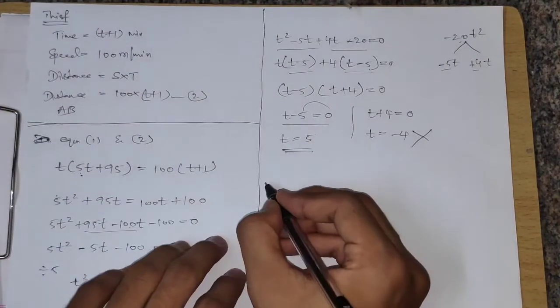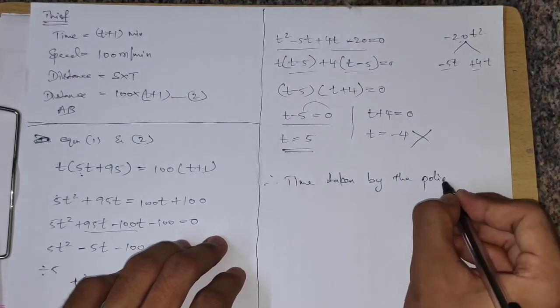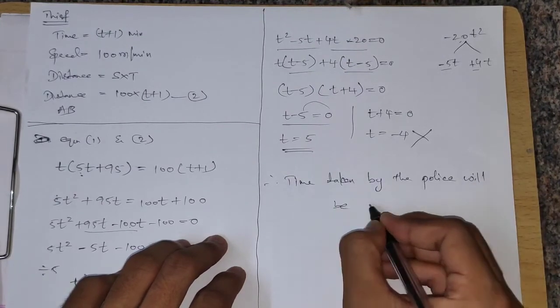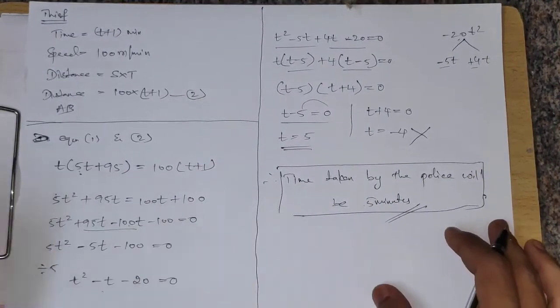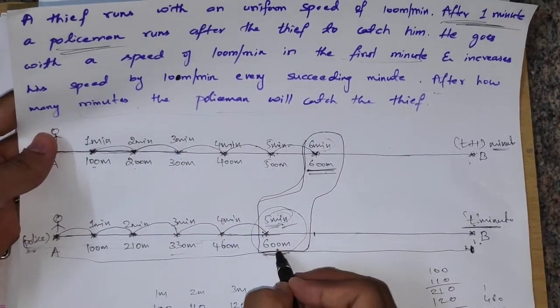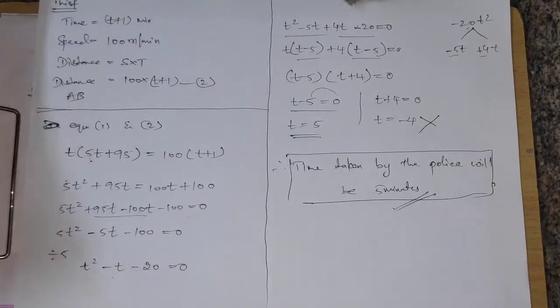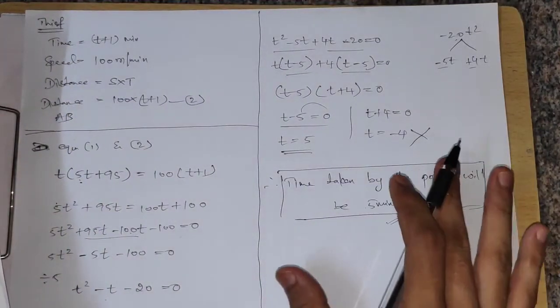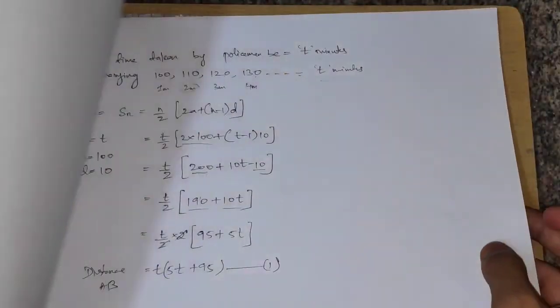So T = 5 or T = −4. We discard the negative value. Therefore, the time taken by the police is 5 minutes. In 5 minutes the police cover 600 meters, and the thief also covers 600 meters in 6 minutes — they meet at that point. I hope this is clear. If you have any doubt, please comment. Thank you.